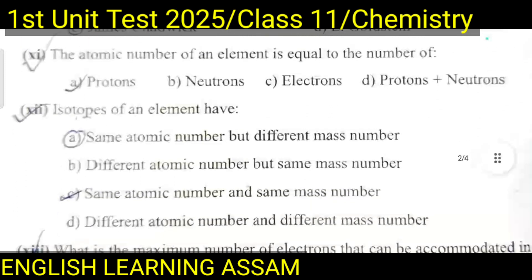Question number eleven: The atomic number of an element is equal to the number of — A. protons, B. neutrons, C. electrons, D. protons plus neutrons. The correct option is A — protons.